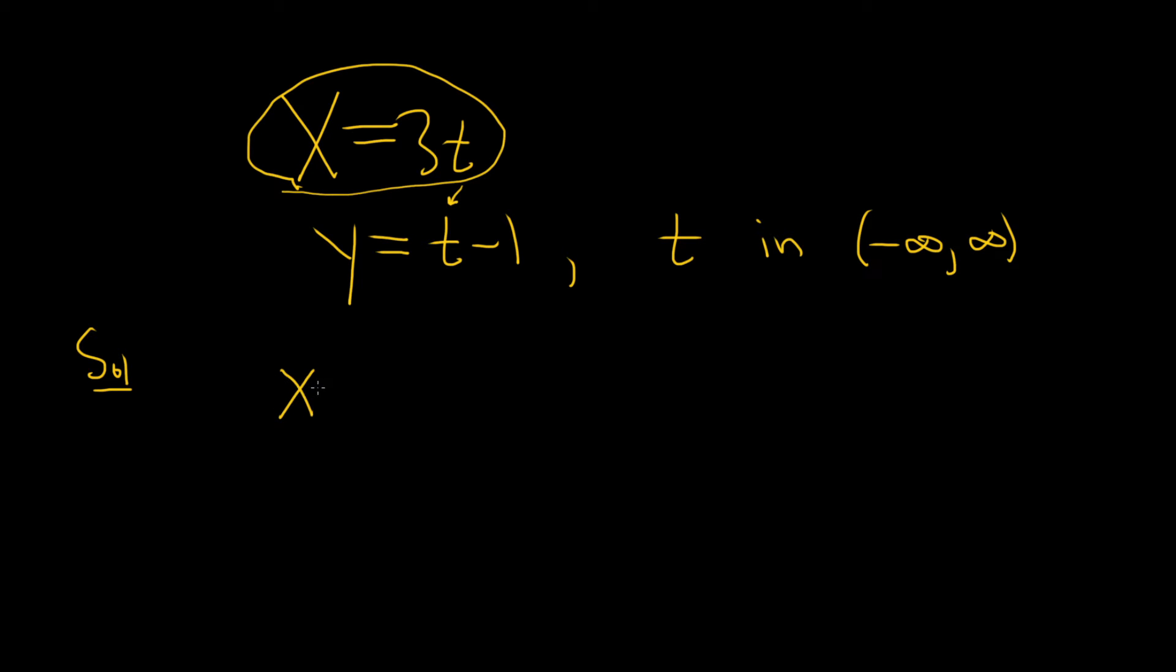If we have x equals 3 times t, to solve for t we can just divide by 3. That gives us t equals x over 3.